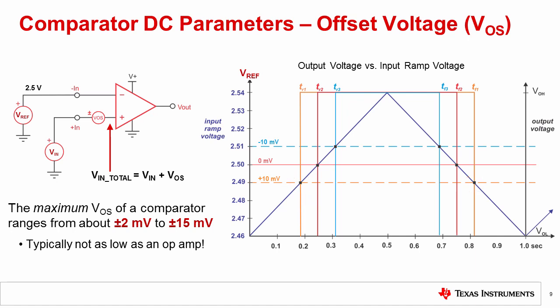If VOS equals -10 millivolts, the total input voltage is equal to VIN minus 10 millivolts, so the output transitions at a higher VIN of 2.51 volts. Keep in mind that not only does the threshold voltage change due to VOS, but the timing of the output waveform is also affected. When VOS equals +10 millivolts, the output waveform is high for approximately 600 milliseconds, while when VOS equals -10 millivolts, the output is high for less than 400 milliseconds. To help prevent these types of errors, the frequency of the input signal can be increased.